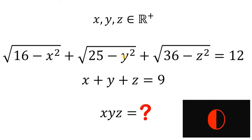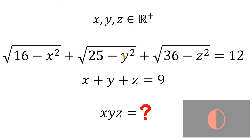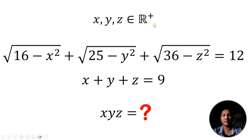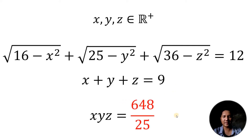Now let's answer this question together. Our goal here is to solve for the product of x, y, and z, given these two equations in three unknowns, where x, y, and z are all positive real numbers. Our answer to this question is simply equivalent to 648 over 25. Now the question is, how do we get this answer? Here's the solution.